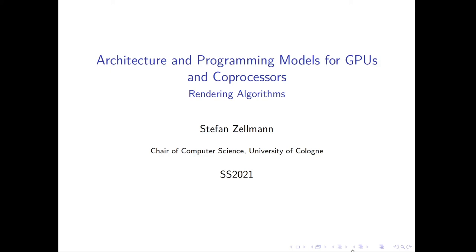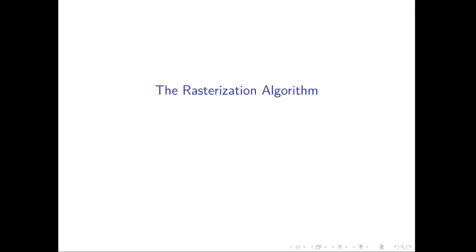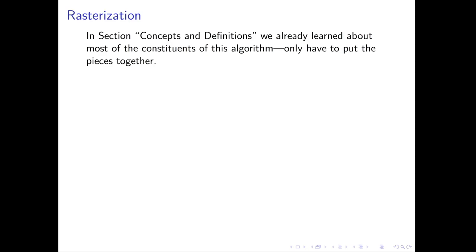Dear students, welcome to this session of my lecture on Architecture and Programming Models for GPUs and Coprocessors. We're still talking about rendering algorithms and today we're going to discuss the rasterization algorithm — the algorithm implemented on GPUs when you use a 3D API like Direct3D, OpenGL, or Vulkan and go through the default machinery of those APIs.